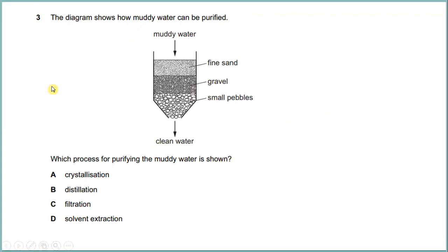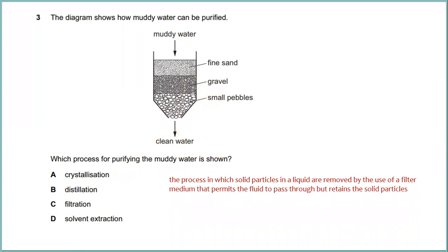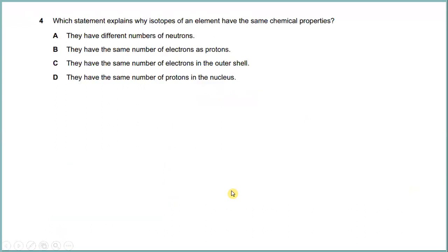Question three: the diagram shows how muddy water can be purified. The muddy water goes through fine sand, then gravel, then small pebbles, and at the end you get clean water. This process is called filtration — the process in which solid particles in a liquid are removed using a filter medium that permits fluid to pass through but retains the solid particles.